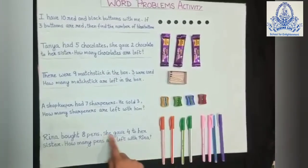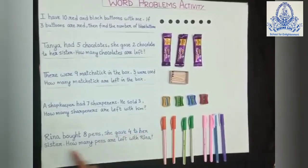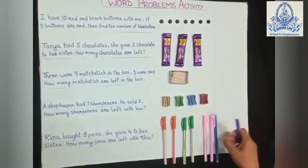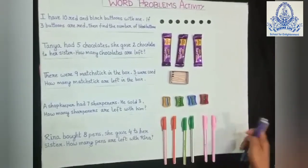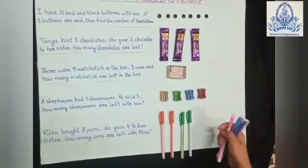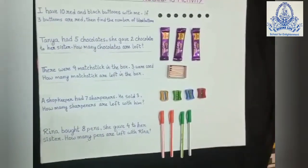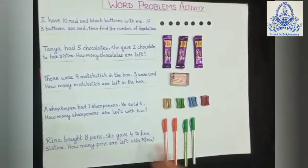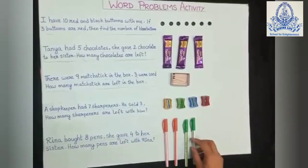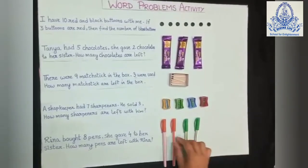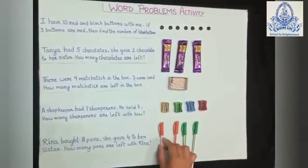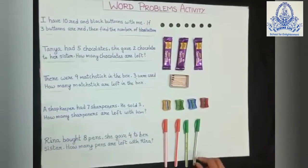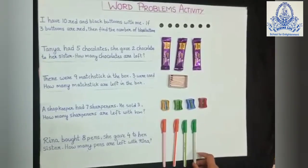She gave 4 to her sister. How many pens did she give? 4 — 1, 2, 3, 4. I will take out 4 pens. How many pens are left? Counting: 1, 2, 3, 4. So 4 pens are remaining with Reena.